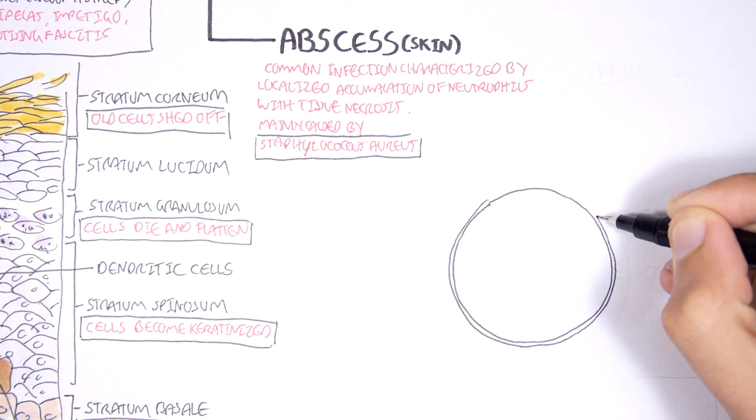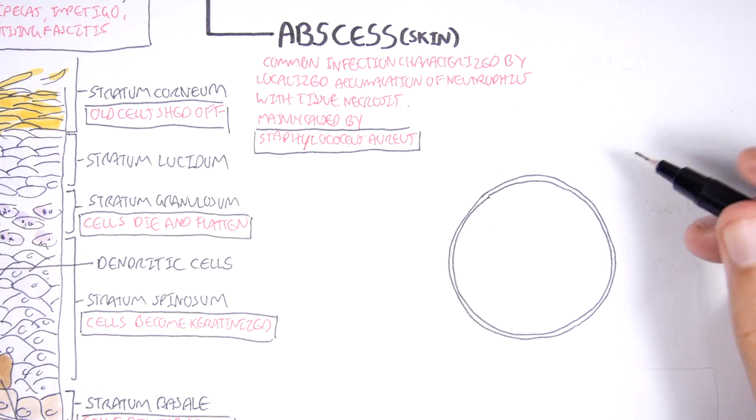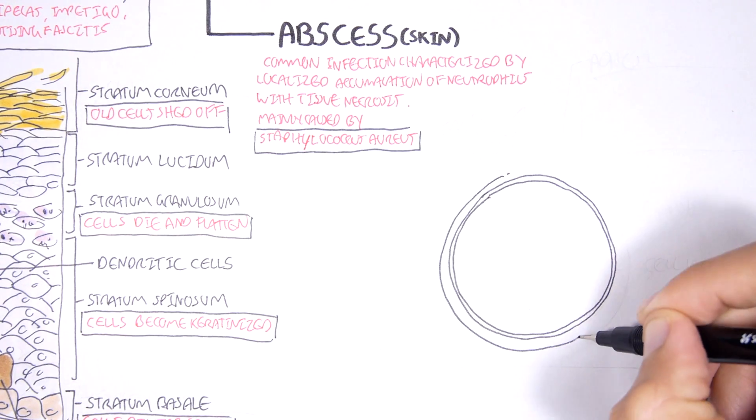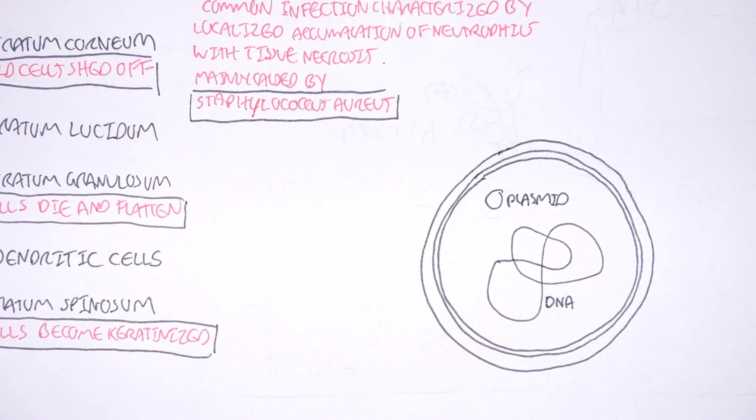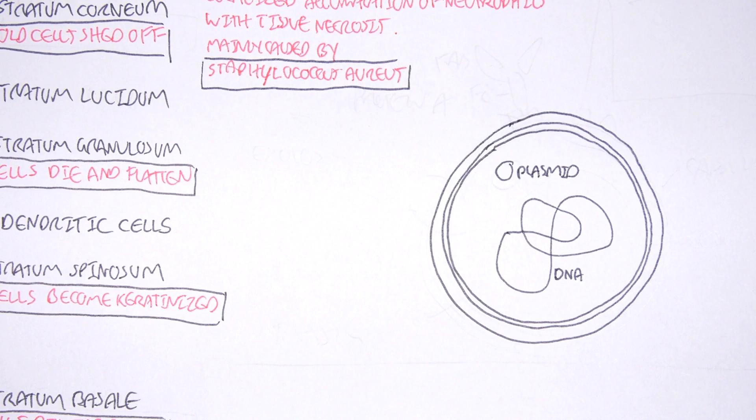Staphylococcus aureus is a coccus, so it's round bacteria. The bacteria has DNA, circular DNA, as well as plasmids which are also genetic material, usually containing some forms of resistant genes.